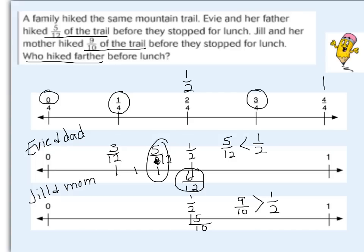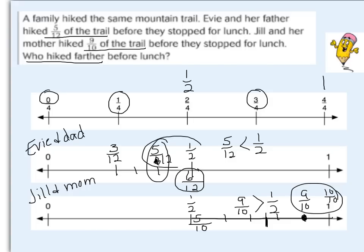For Jill and her mom, they hiked nine-tenths, which is greater than a half, so I'm looking at the range from one-half to a whole. In tenths: five-tenths is here, then six-tenths, seven-tenths, eight-tenths, nine-tenths, and ten-tenths is the whole. Three-fourths would be about halfway between one-half and one. She hiked all the way to nine-tenths, which is even farther than three-fourths, so the benchmark she's closest to is a whole. Evie and her dad were closer to the one-half benchmark.